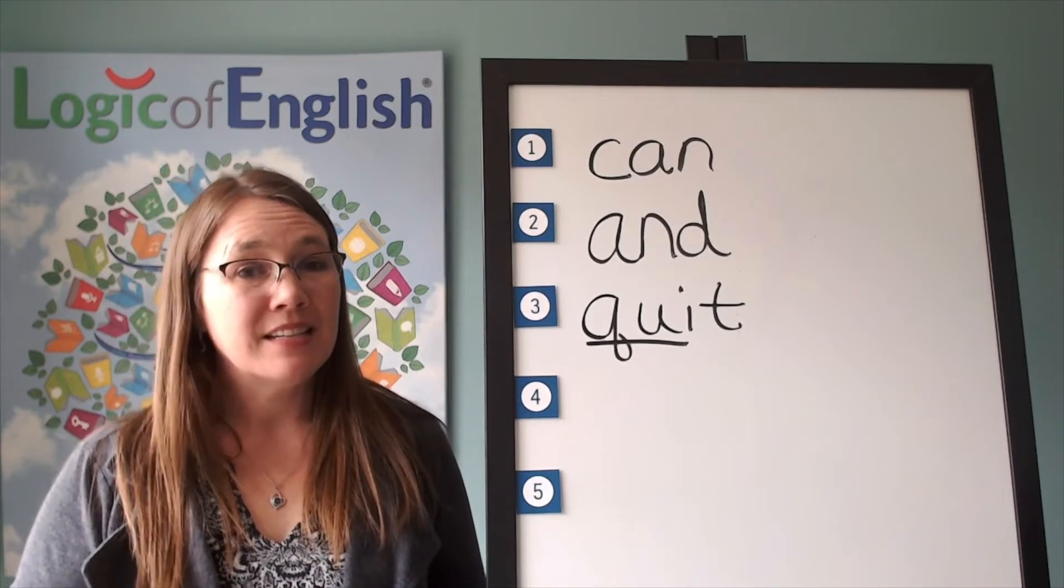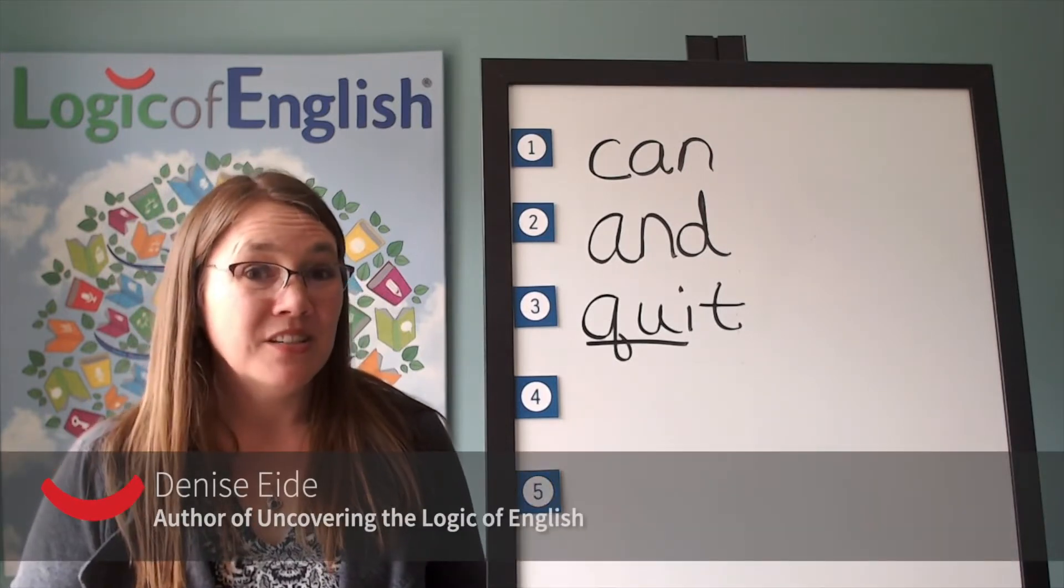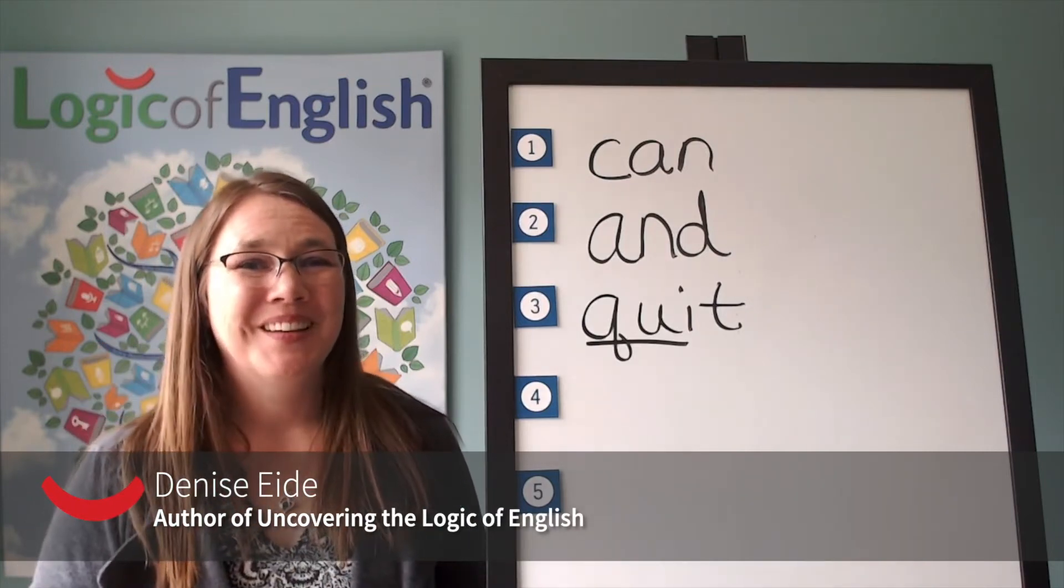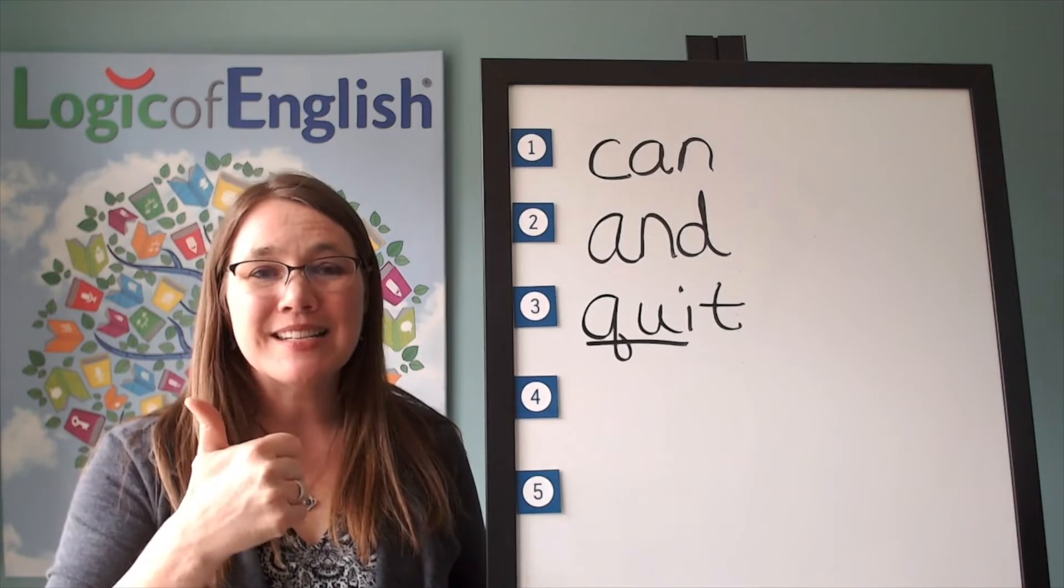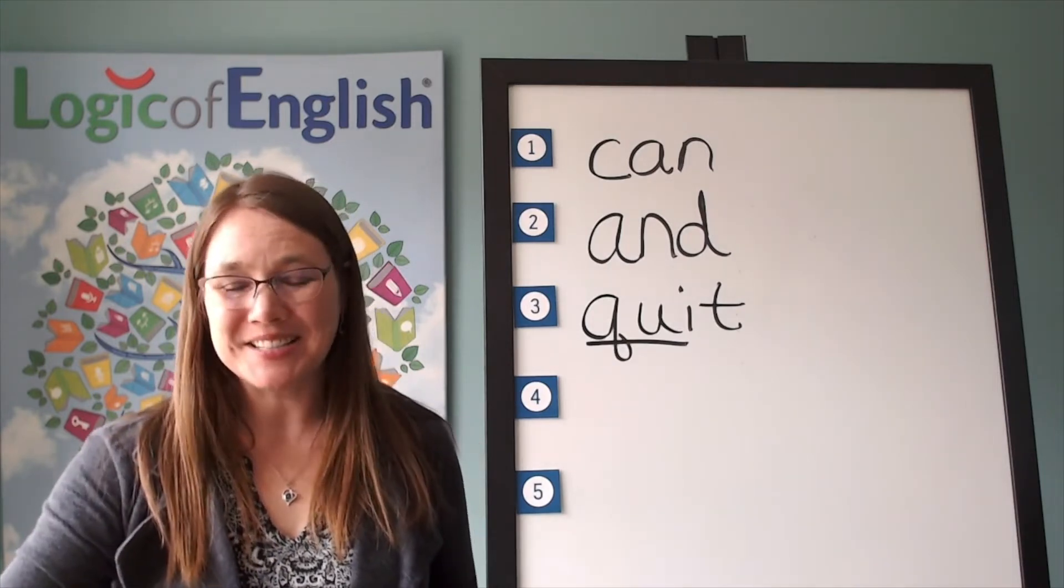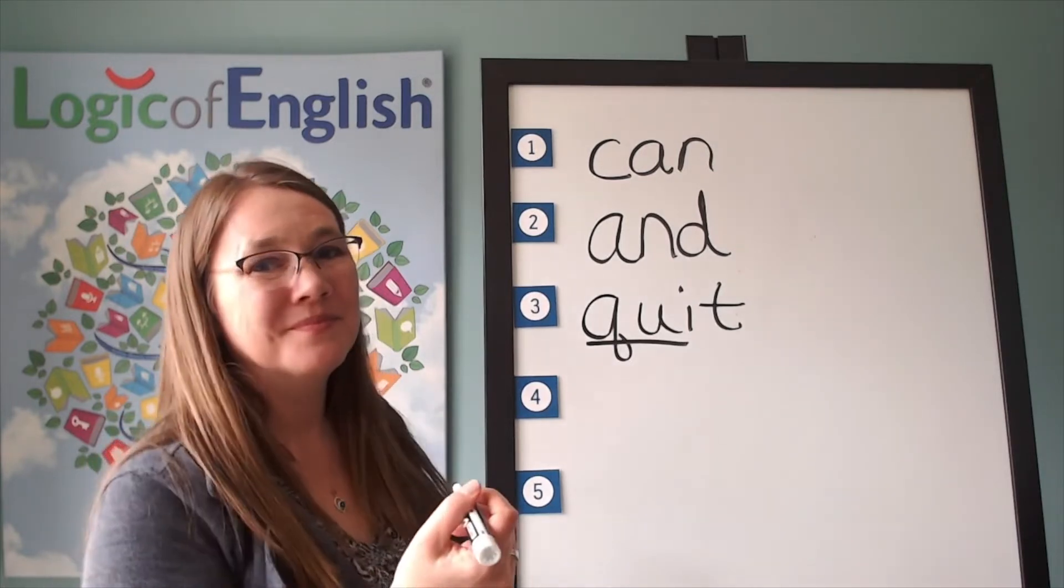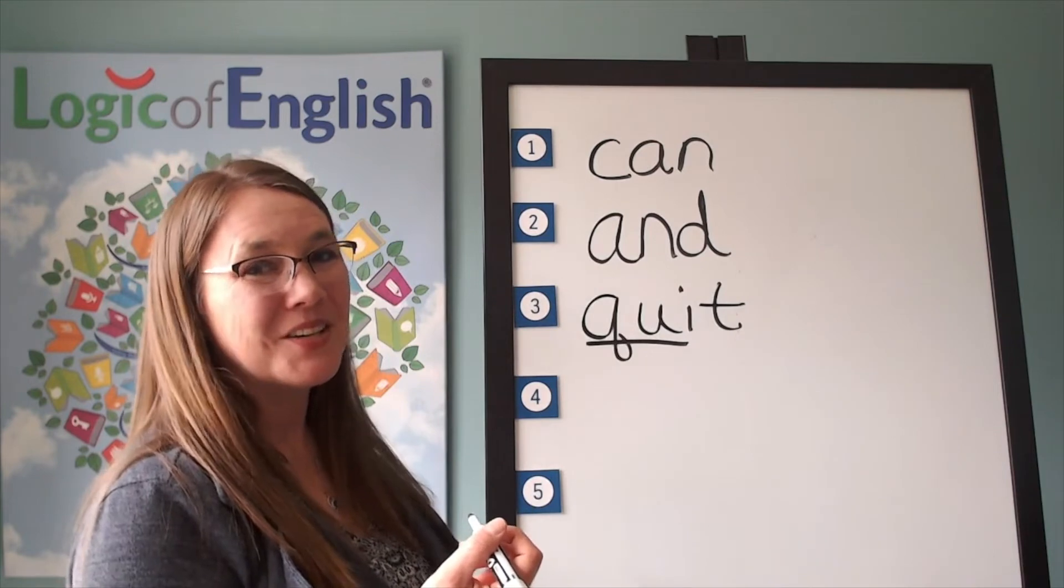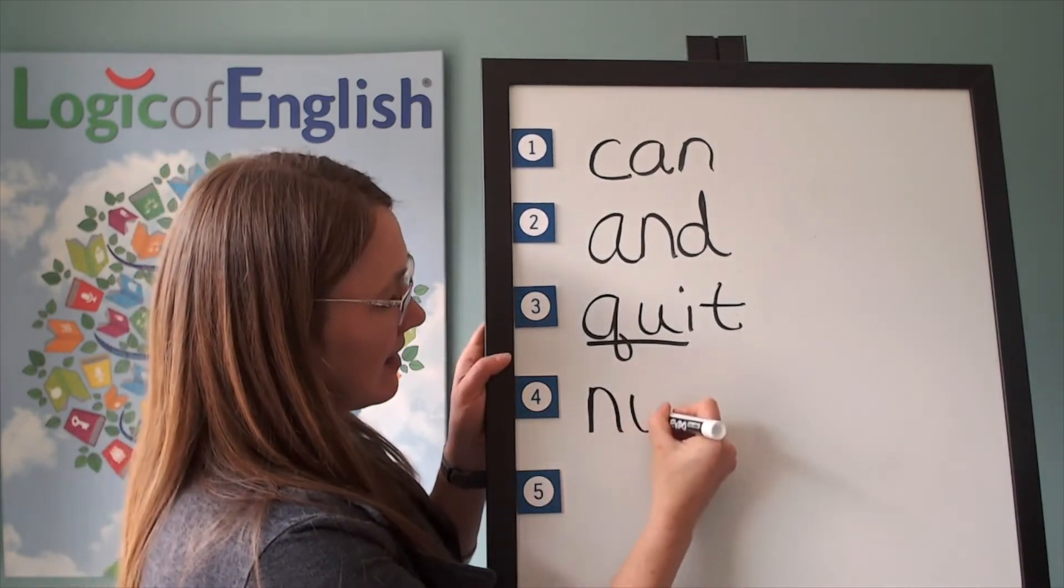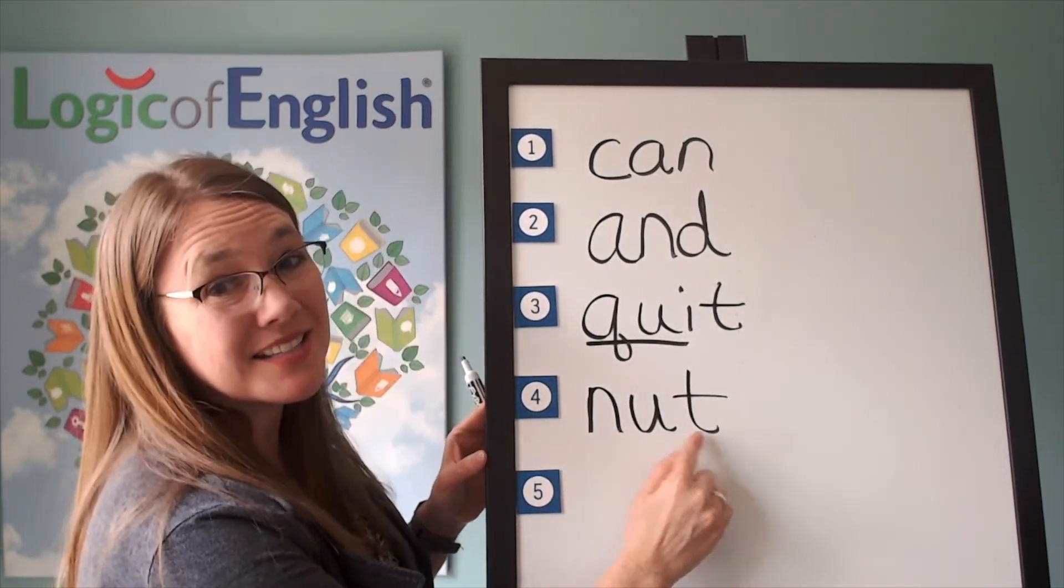The next word is nut. A peanut is a kind of nut. Go ahead and say nut. Let's sound it out. N-U-T. Go ahead and write it. You've got it. Good sounding it out. Now help me to write it. N-U-T. And let's read it. N-U-T. Nut.